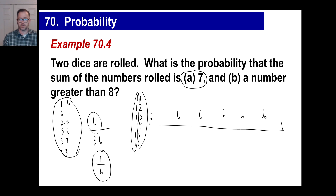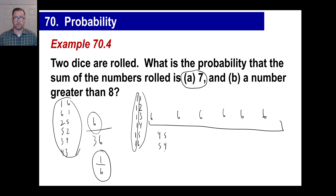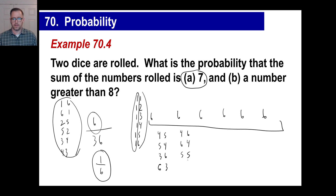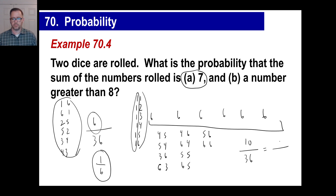What's the probability of rolling a number greater than eight? Let's list the combinations: four and five, five and four (sum nine); three and six, six and three (sum nine); four and six, six and four, five and five (sum ten); six and five, five and six (sum eleven); and six and six (sum twelve). That's ten possibilities out of 36 total. Reducing by a factor of two gives five out of eighteen.